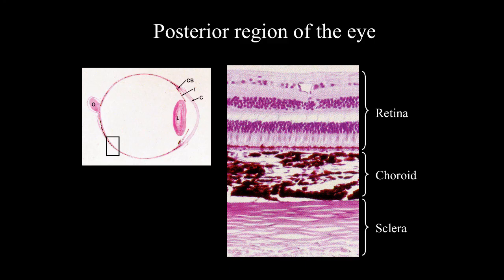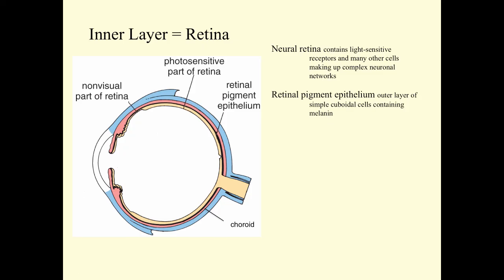In the remainder of this podcast, we're going to talk about the posterior region of the eye — the retina. Going through the eye wall, you have the sclera as the outer part, the choroid as the middle layer, and then the retina itself as the inner layer. The neural retina contains light-sensitive receptors and many other cell types that make up a complex neural network.